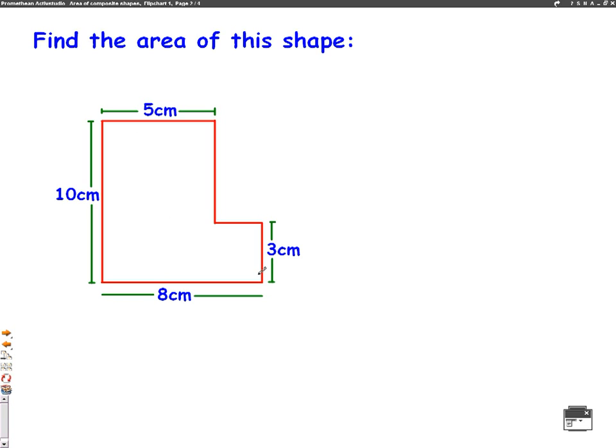So the way we do it is we split the shape up into two shapes which we can find. At the minute it's an L shape which we wouldn't be able to work out. So we can split it up. I'm going to split it downwards into two rectangles. We have rectangle 1, the larger one, and rectangle 2 on the side.